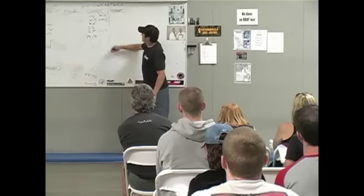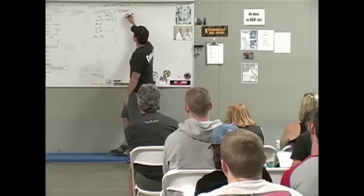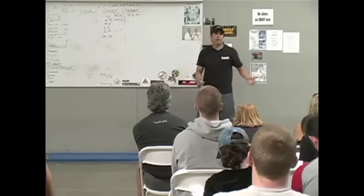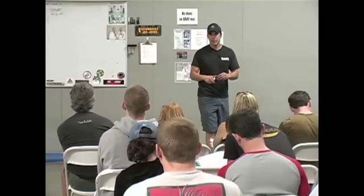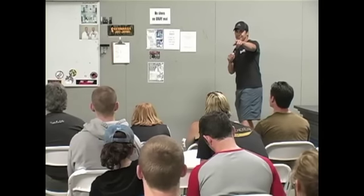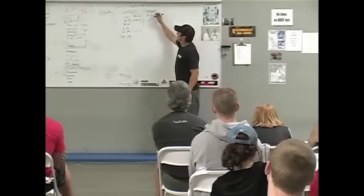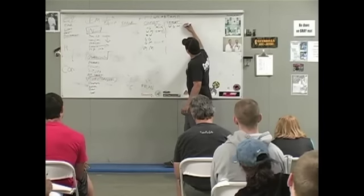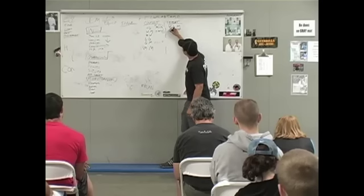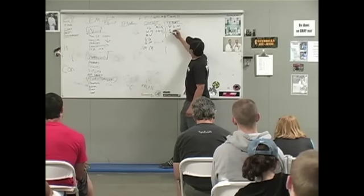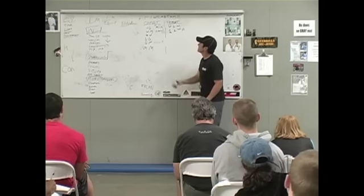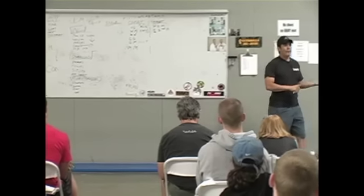So what would a triplet be? Well, it's pretty obvious — we take all three and combine them: weightlifting, gymnastics, and monostructural. What would be a good example of a triplet with that? Helen. Helen is run 400 — that's your monostructural effort — 21 kettlebell swings — that's your weightlifting effort — and 12 pull-ups — that's your gymnastics effort. Three rounds. That's a pretty common triplet.